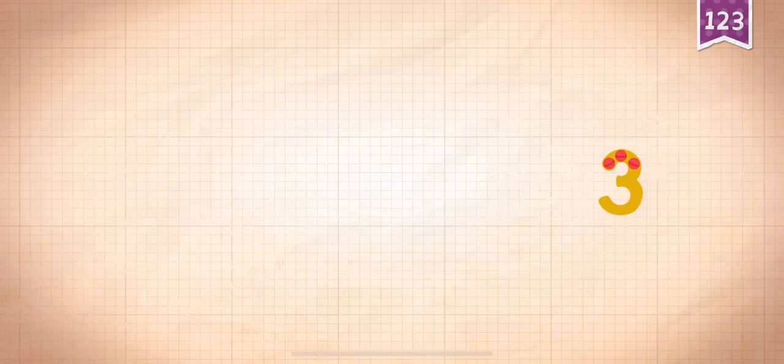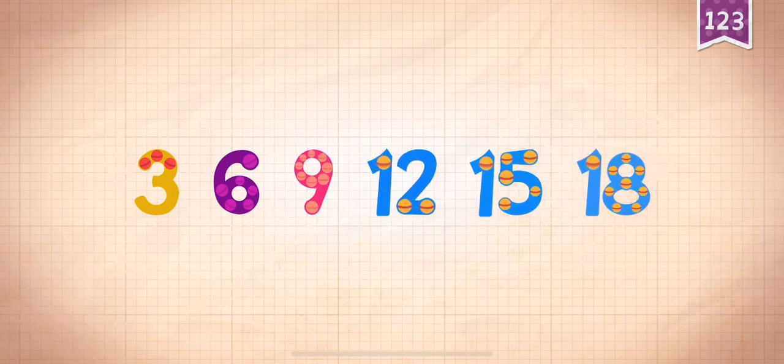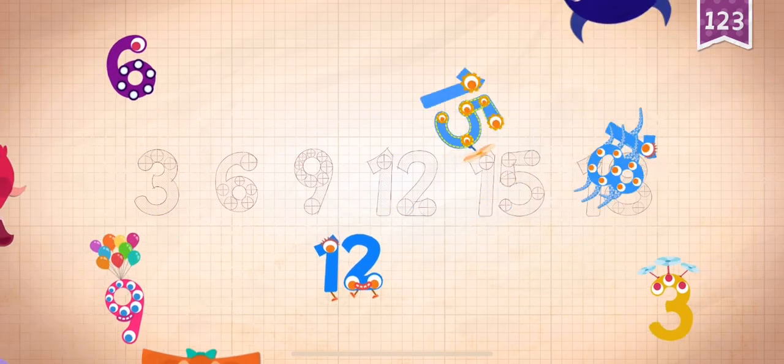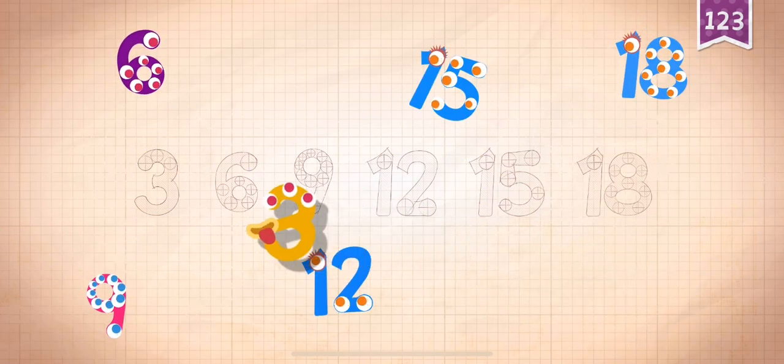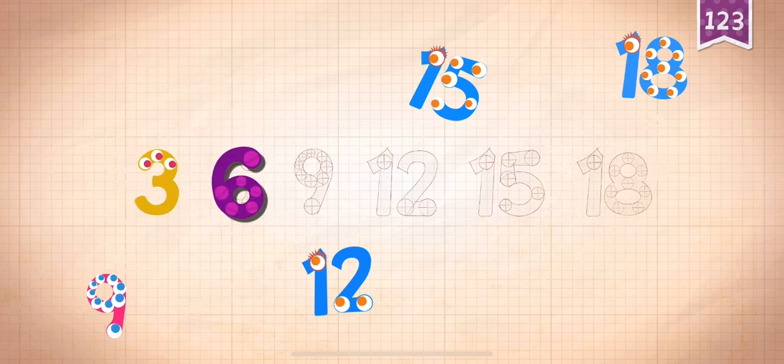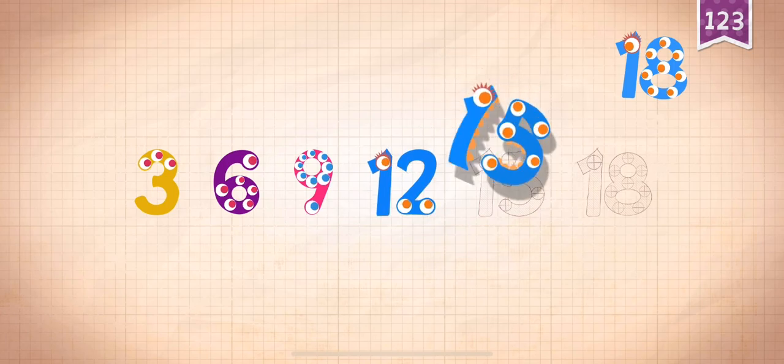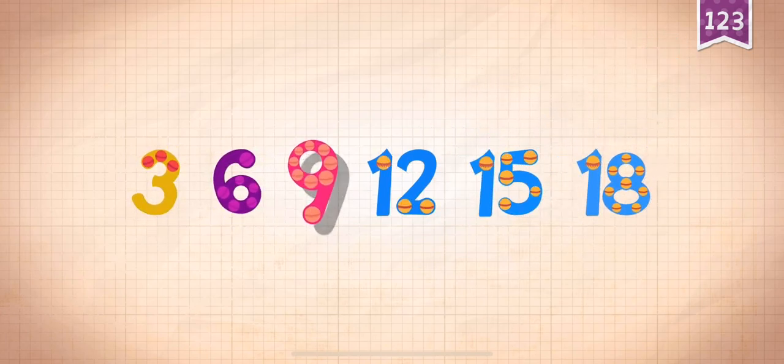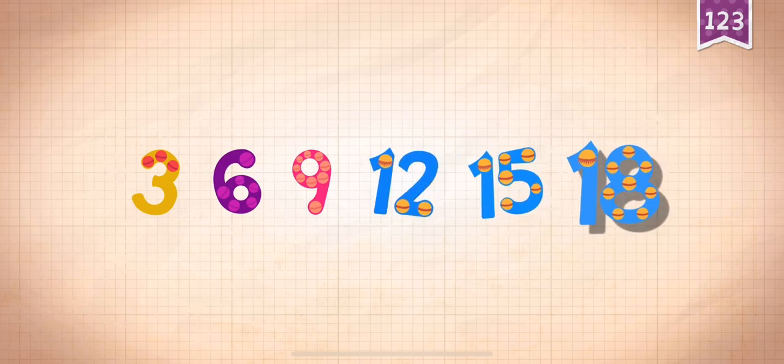18. Count by threes. 3, 6, 9, 12, 15, 18. Three, three, three, three, three, three, three. Six. Nine, nine, nine, nine. Twelve. Twelve. Fifteen, fifteen, fifteen. Eighteen, eighteen. Three, six, nine, twelve, fifteen, eighteen.